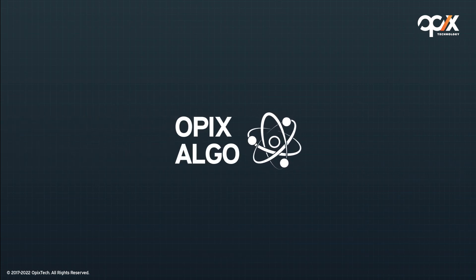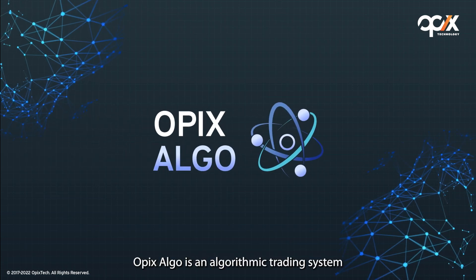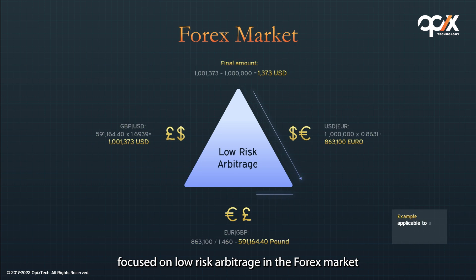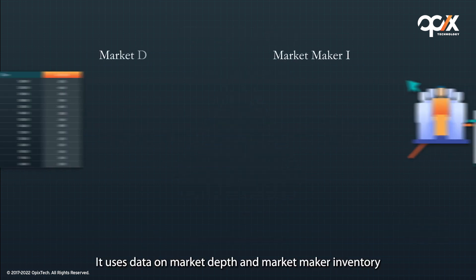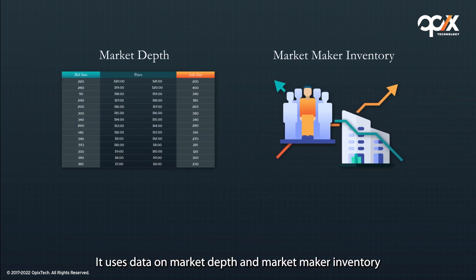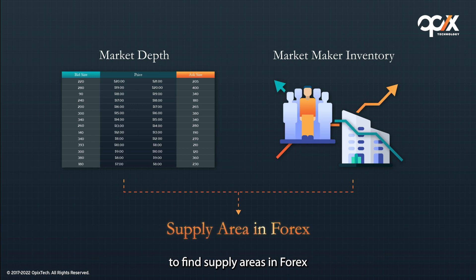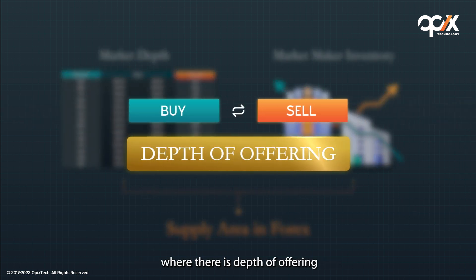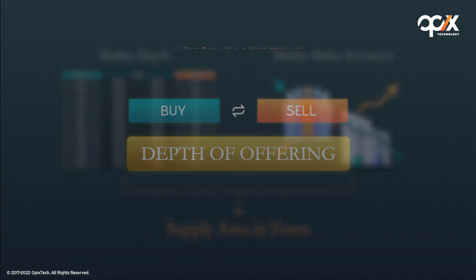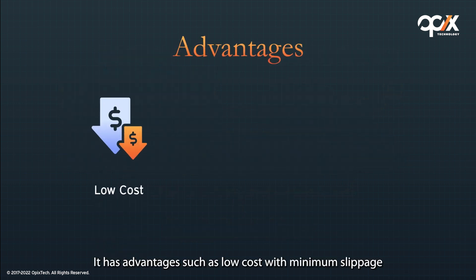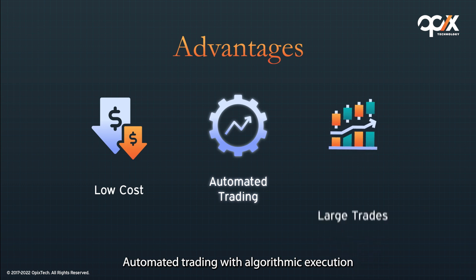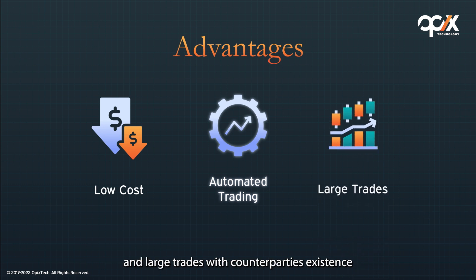What is OPEX ALGO? OPEX ALGO is an algorithmic trading system focused on low-risk arbitrage in the forex market. It uses data on market depth and market maker inventory to find supply areas in forex. From there, trades are carried out in areas where there is depth of offering. It has advantages such as low cost with minimum slippage, automated trading with algorithmic execution, and large trades with counterparties' existence.